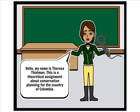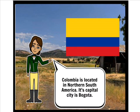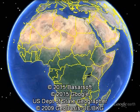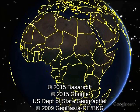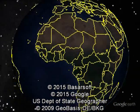Hello, my name is Teresa Thielman and this is a theoretical assignment about conservation planning for the country of Colombia. Colombia is located in northern South America and its capital is Bogota. At the tip of South America is a country of lush rainforests, towering mountains and coffee plantations.